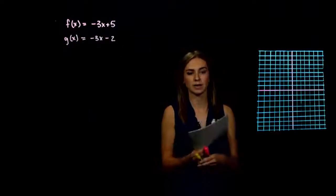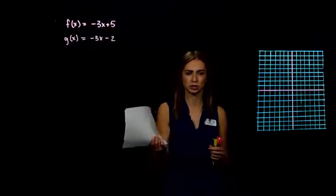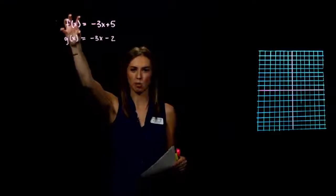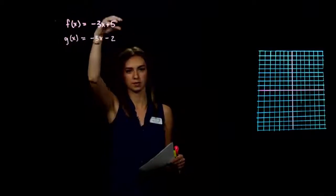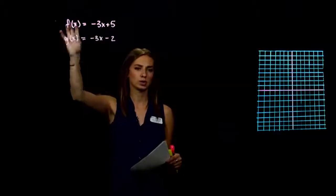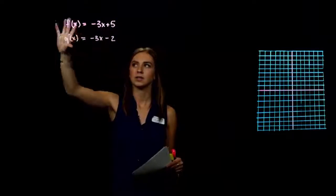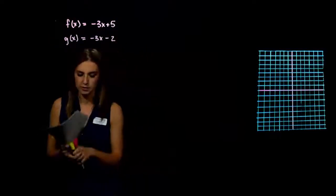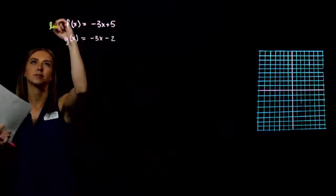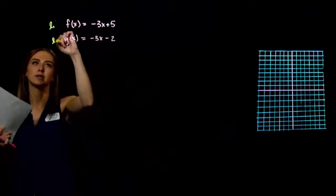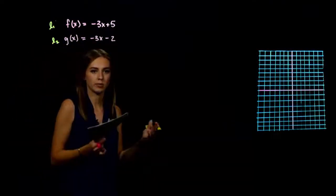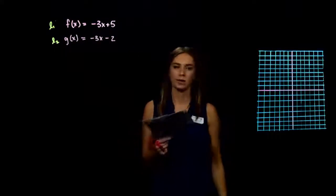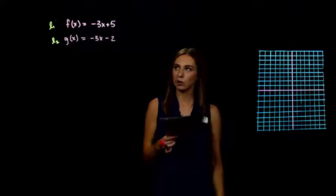The next system is given in function notation, but f(x) and g(x) both just mean y. So we have y equals negative 3x plus 5 and y equals negative 3x minus 2 — two different equations. I'll label them line 1 and line 2.